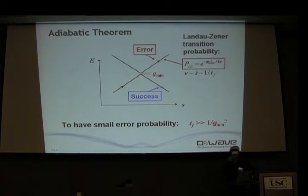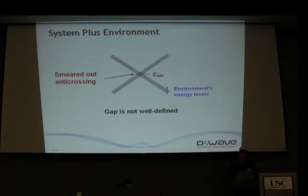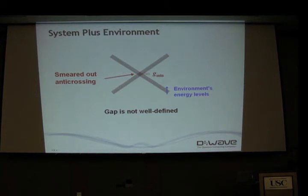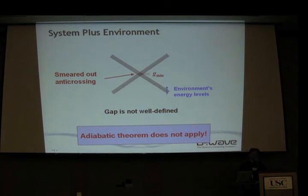In reality, this is not what happens. Your system is coupled to the environment and the energy levels are broadened. Eventually, when the system is large, the gap is very small, and the coupling to the environment is large, the broadening will be larger than the gap and there will be no well-defined gap. Therefore, the adiabatic theorem described in the previous slide does not work.